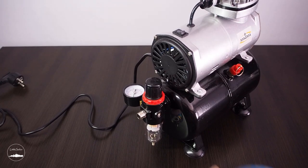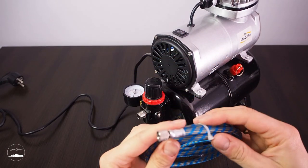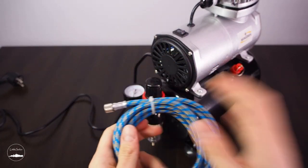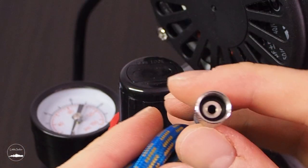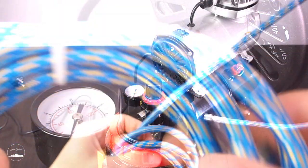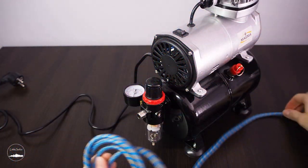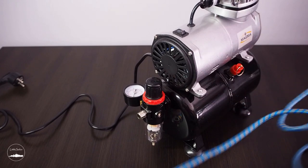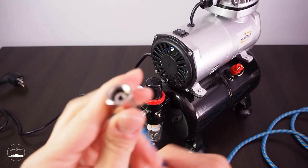Next element is of course the airbrush hose that connects the compressor with the airbrush. High quality hose 180 centimeters long has internally threaded ends 1/4 inch to connect the compressor and 1/8 inch for the airbrush. It costs about 5 dollars.